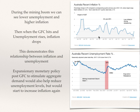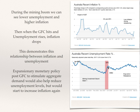Let's look at the relationship together. During the mining boom, we can see inflation and the unemployment rate roughly line up. As unemployment decreases because more people are picking up jobs, we can see lower unemployment and higher inflation. Then when the GFC hits and unemployment rises, inflation takes a dive — an example of that relationship between inflation and unemployment. Expansionary monetary policy after the GFC would aim to stimulate aggregate demand, help reduce unemployment levels, but it's also going to start to cause inflation again. As we reduce unemployment, we're going to see inflation start to rise up that curve.